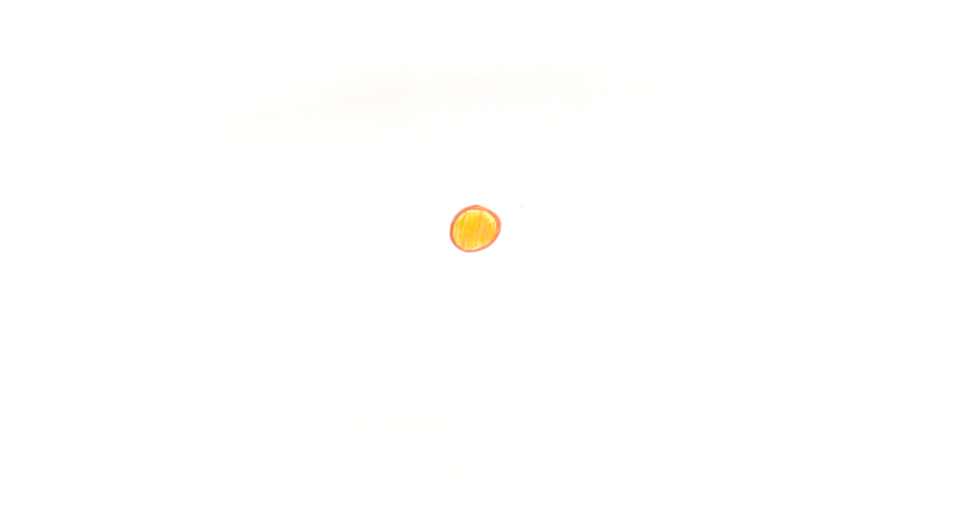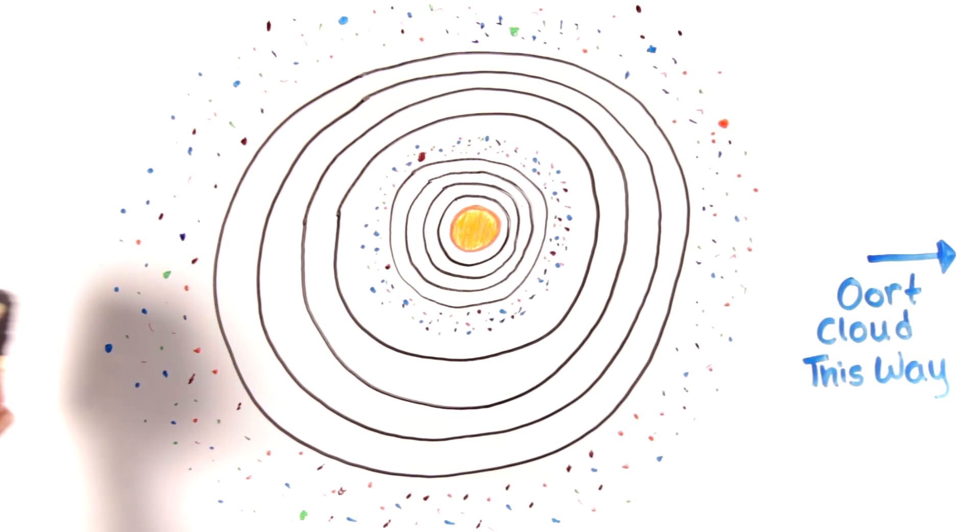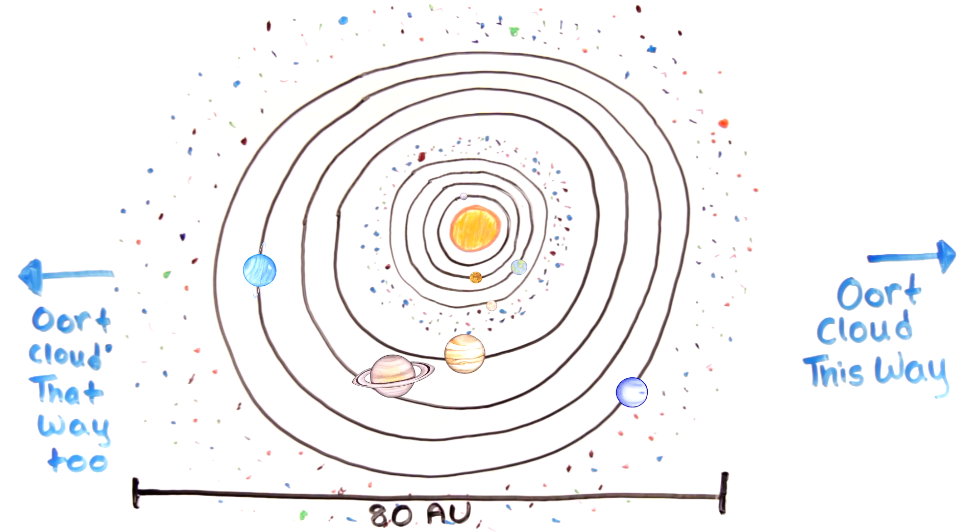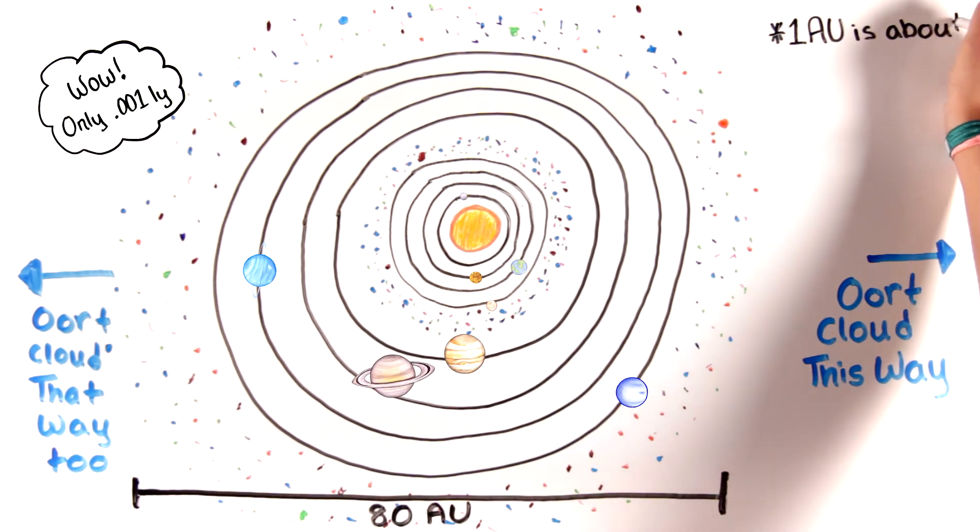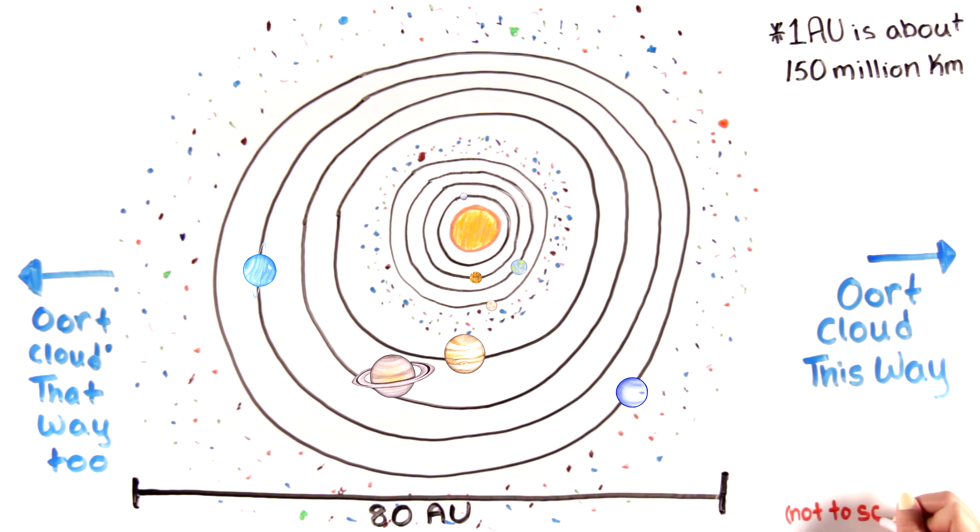Within the Milky Way, our solar system has a diameter of 80 AU, and AU is the distance from the Sun to the Earth, about 150 million kilometers.